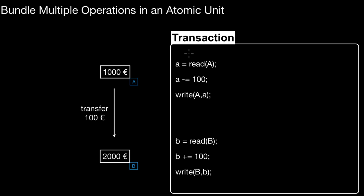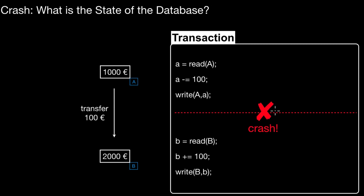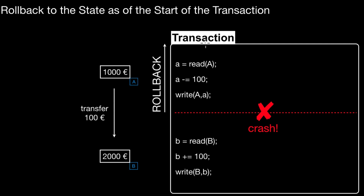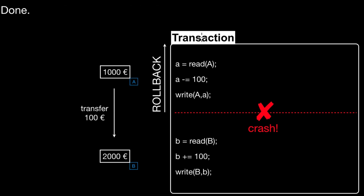So it's either all of it gets executed or none of it gets executed. If a crash happens while the transaction is running, the database system will make sure that changes already applied will never find their way to the database store. The state of A will not be changed, because the transaction didn't run to the end — it did not commit. In SQL we say 'commit' at the end of a transaction. Since this transaction did not commit successfully, value A will never be overwritten. The database rolls back to the old state, as if this transaction never executed.